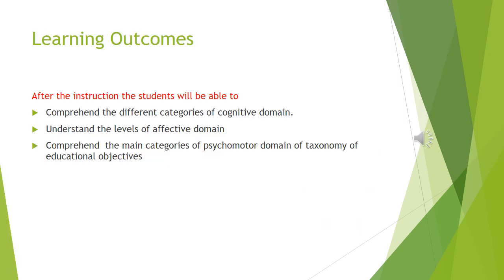Here are the learning outcomes of this session. After the instruction, the students will be able to comprehend the different categories of cognitive domain, understand the levels of affective domain, and comprehend the main categories of psychomotor domain of taxonomy of educational objectives.